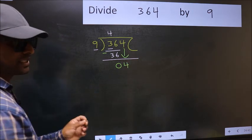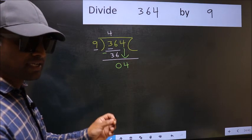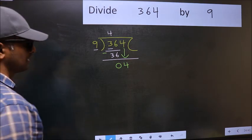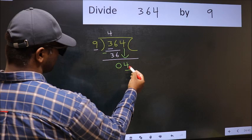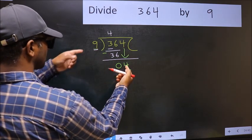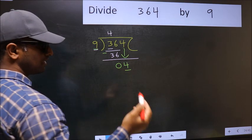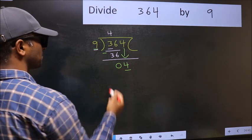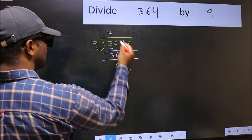After this step, the mistake happens. And the mistake is this: Here we have 4 and here 9. 4 is smaller than 9. So what many do is, they directly put dot and take 0.